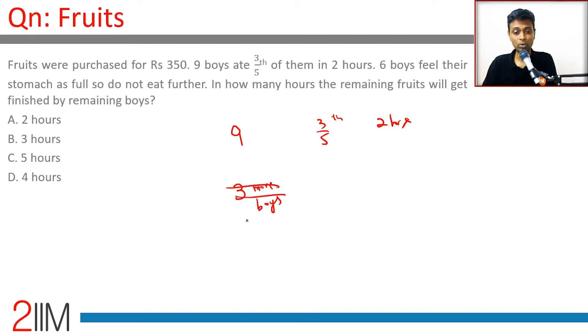Let's assume all 9 were eating. The remaining two-fifths, how long would they have taken? They took 2 hours for three-fifths, so for two-fifths they will take 2 times 2/3. If 9 boys had been there, in another 4/3 hours they would have eaten everything.